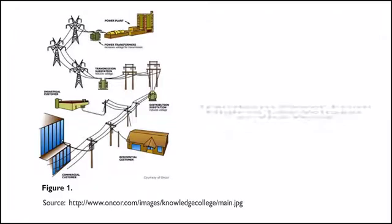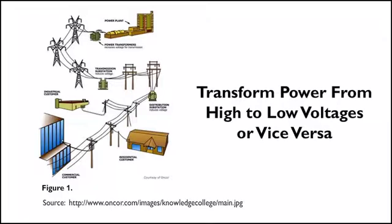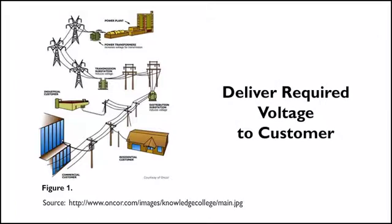One of the main purposes of an electrical substation is to transform power from higher voltages to lower voltages, or vice versa, to meet the requirements of the specific distribution network. These substations may accommodate multiple changes in voltage within a certain electrical system, eventually delivering the required voltage to the customer.